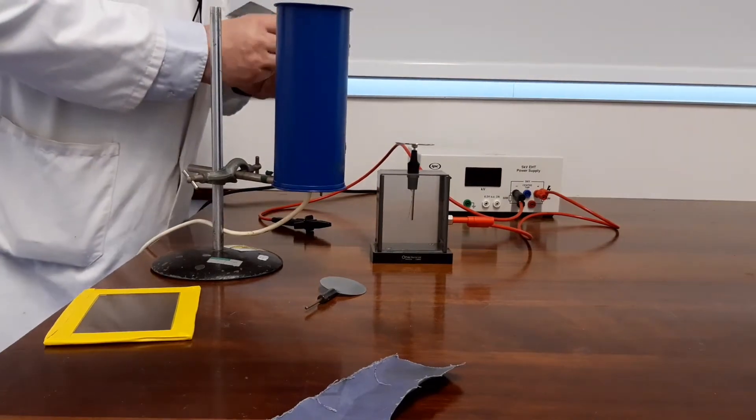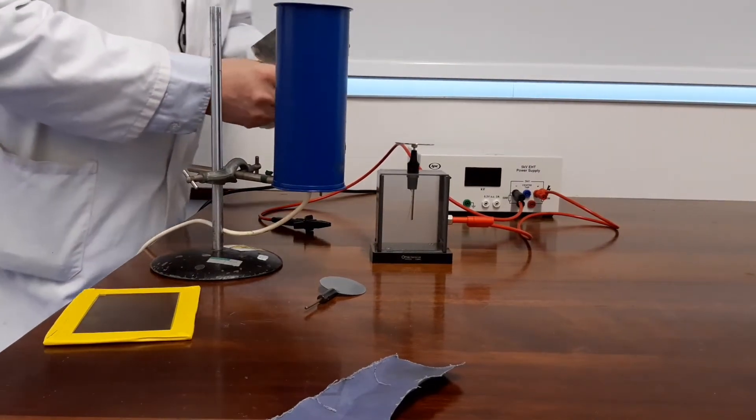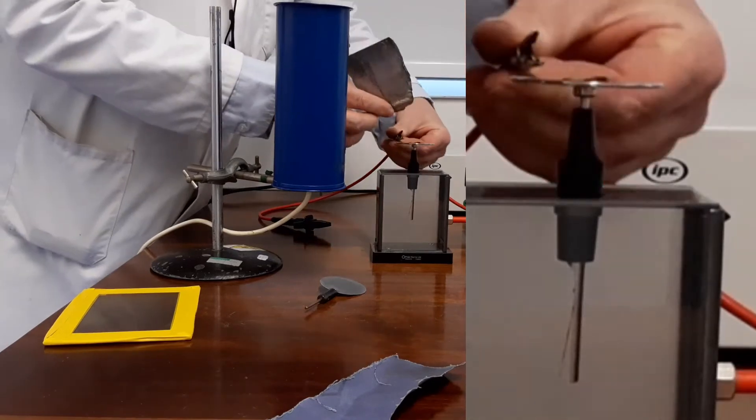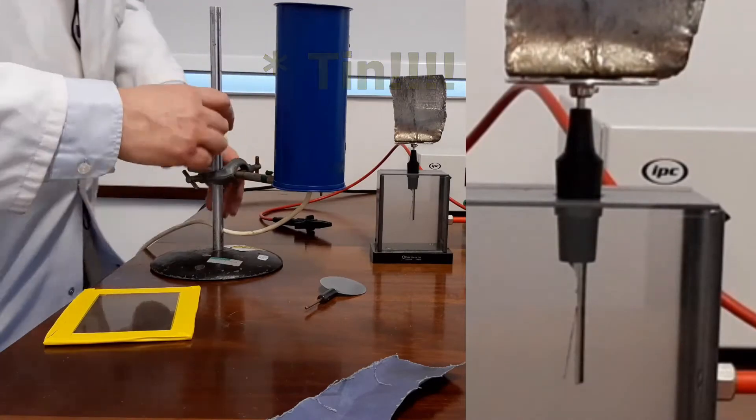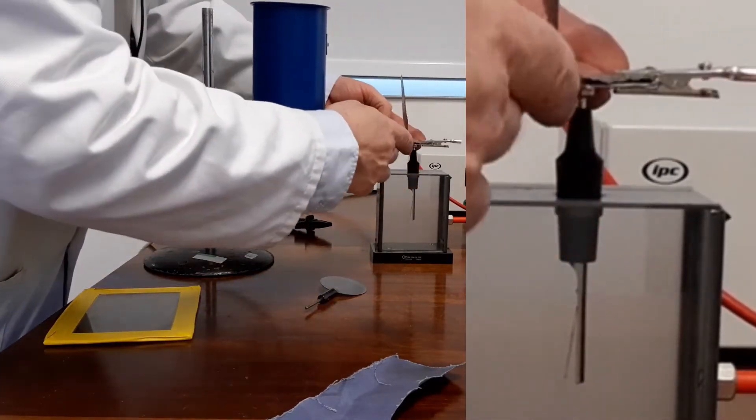And all I am doing is I am going to clip the zinc using a crocodile clip to the top of the base there. Spin that round so you can see what is going on.